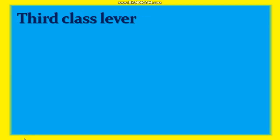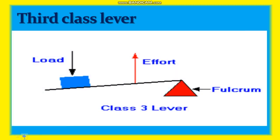Now the third class lever. In the third class lever, the effort is located between the fulcrum and the load — so here the effort is at the center. Examples of the third class lever are a pair of tongs, a tweezer, a stapler, or a fishing rod.